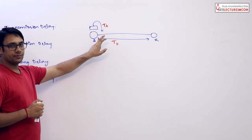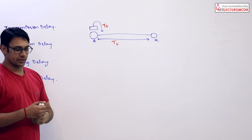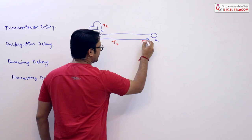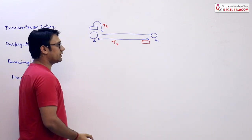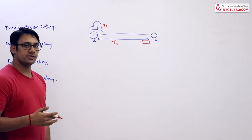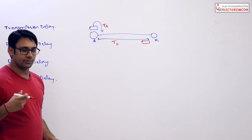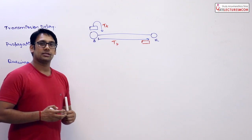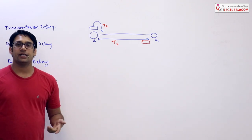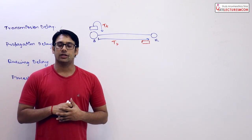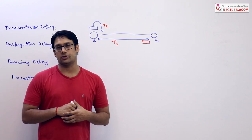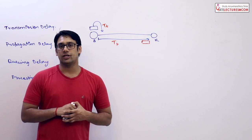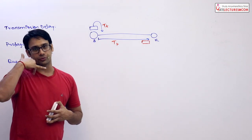We know what transmission delay is and we know what propagation delay is. Now when this data packet reaches the receiver, the receiver is not going to accept this data packet directly — it is going to wait for some time. Sometimes the sender is sending data but the receiver is not always in a position to accept the data packet instantaneously.